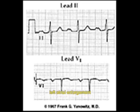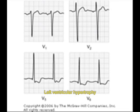Now let us see left ventricular hypertrophy. In left ventricular hypertrophy, you can see big R and S waves. In fact, if you combine S and R, it will be more than 35 millimeters. So whenever you see big S and R waves, you should suspect left ventricular hypertrophy.